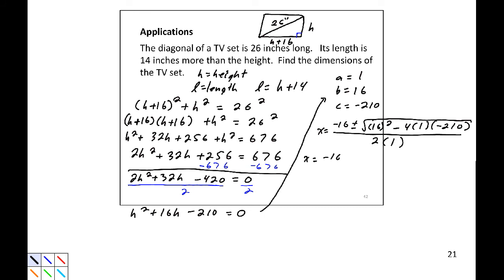So negative 14 plus or minus the square root of something divided by 2. 14 squared plus 960 gives us 1156 underneath our square root. Now, that is not a perfect square, so that means we should simplify this.